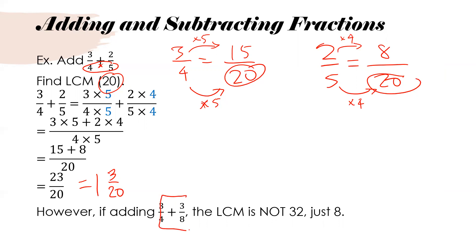If you're adding a fraction like 3 over 4 plus 3 over 8, you wouldn't just multiply 4 and 8 to find the lowest common multiple — it would actually be 8. You always want to look for the smallest common multiple. You want to be efficient. With fractions it doesn't make a huge difference, but when you're looking at rational functions, it does. So we're looking at how to identify the lowest common multiple, change your rational function to find an equivalent rational function, and then add or subtract.